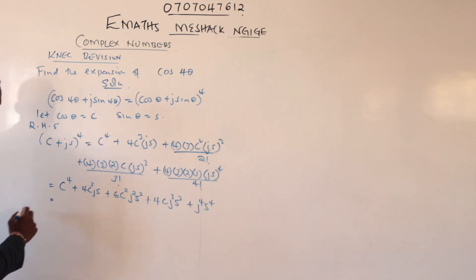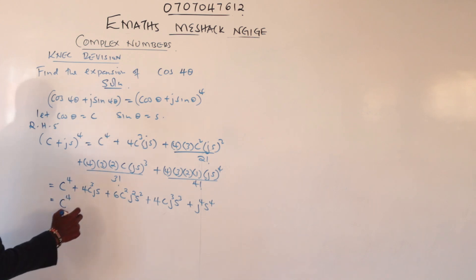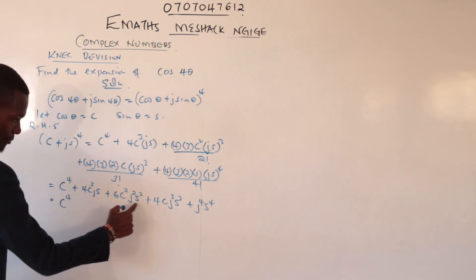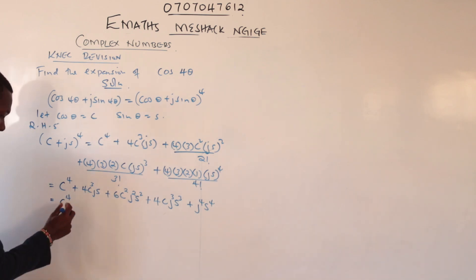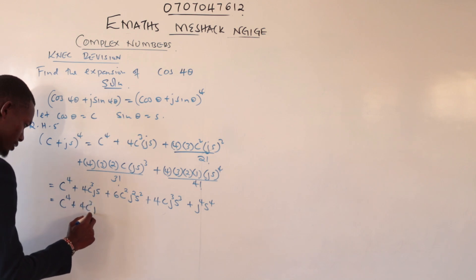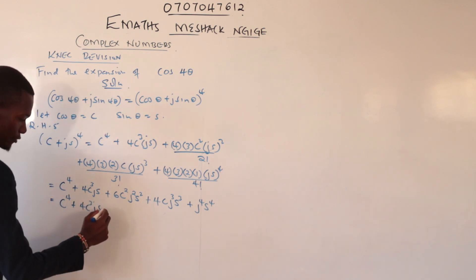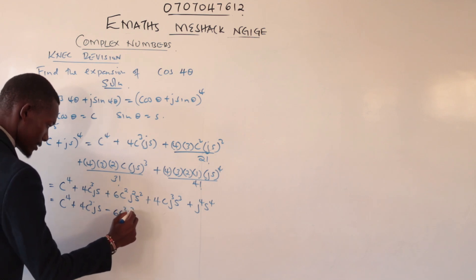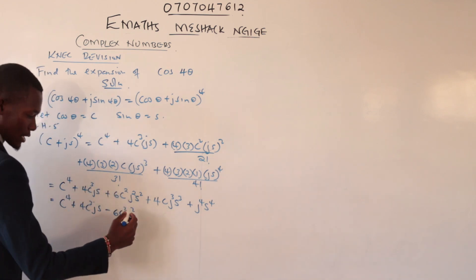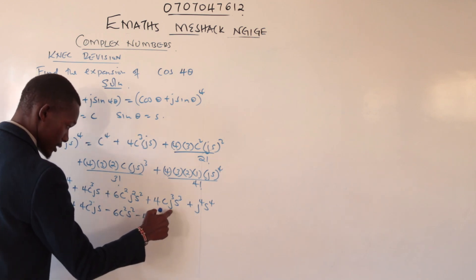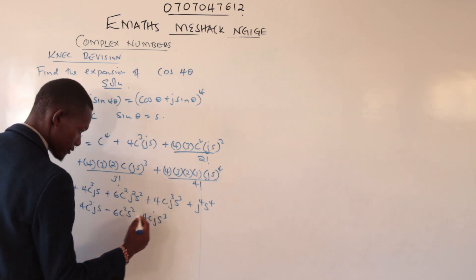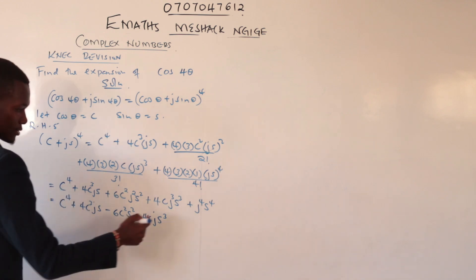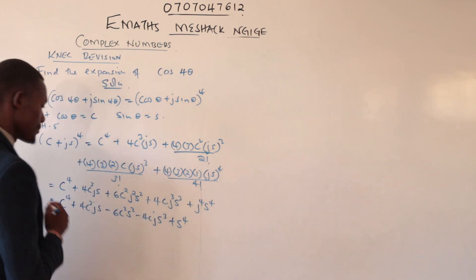Now replacing the powers of j: j remains j, so we keep 4c³js. j² gives −1, so we have −6c²s². j³ gives −j, so we have −4cjs³. j⁴ gives 1, so we have +s⁴.